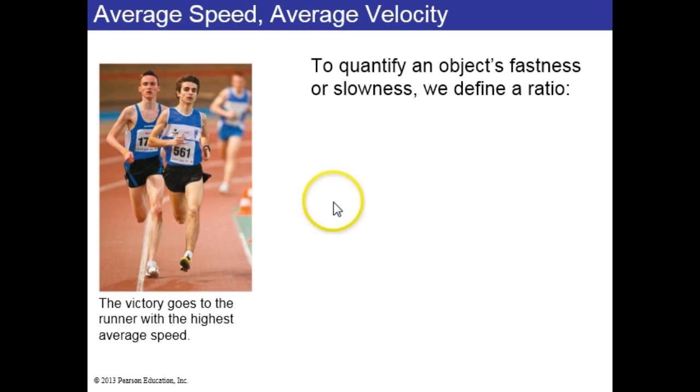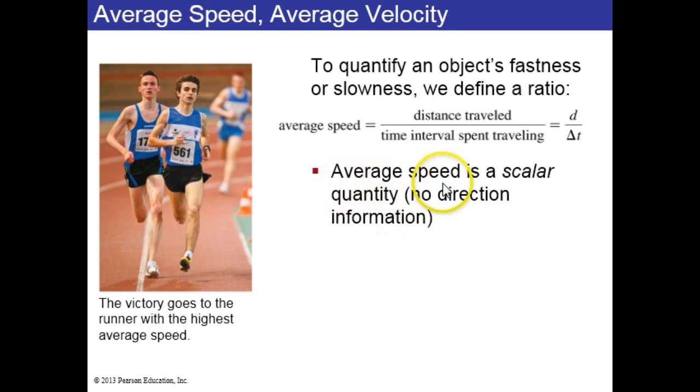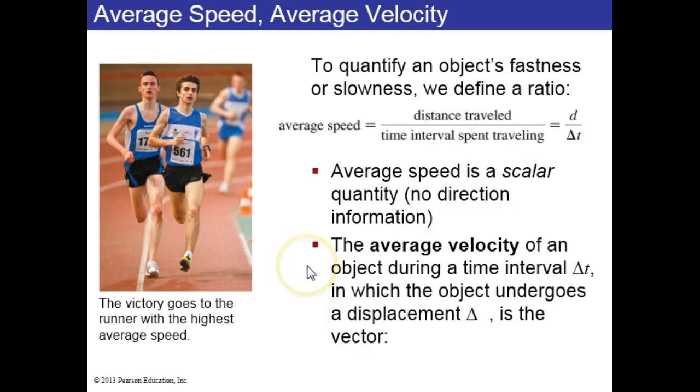So now that we have position and time, we can find speed. Speed is distance traveled divided by delta t. For example, these guys, they all start at the same time, so the victory goes to the runner with the highest average speed. But this doesn't tell us anything about direction; it's a scalar quantity. If you want to include direction, there's something called average velocity. Velocity is the displacement vector divided by delta t.